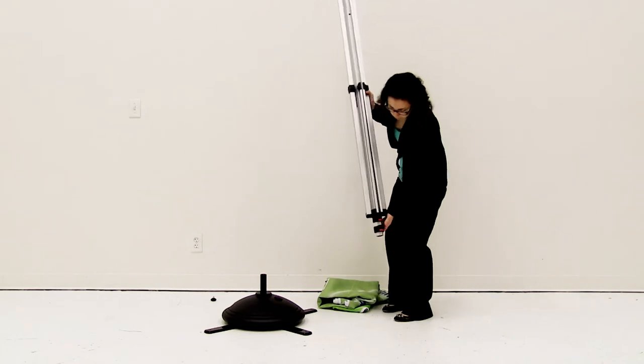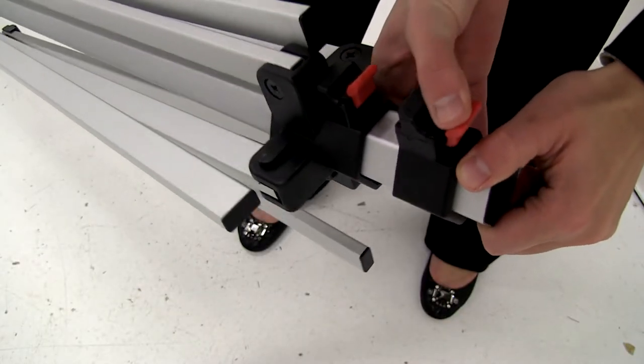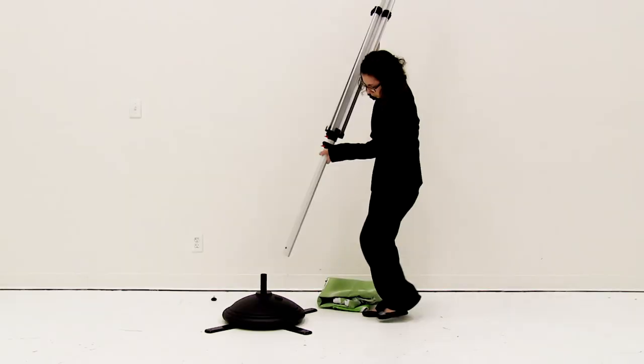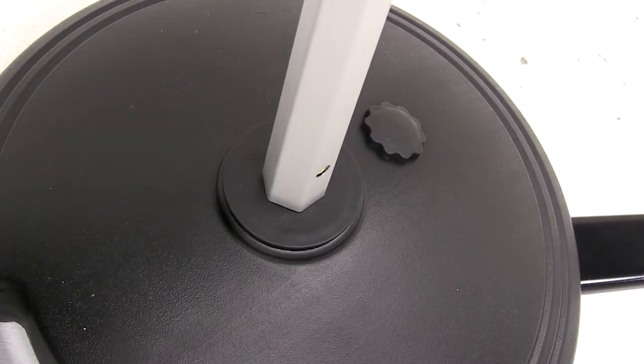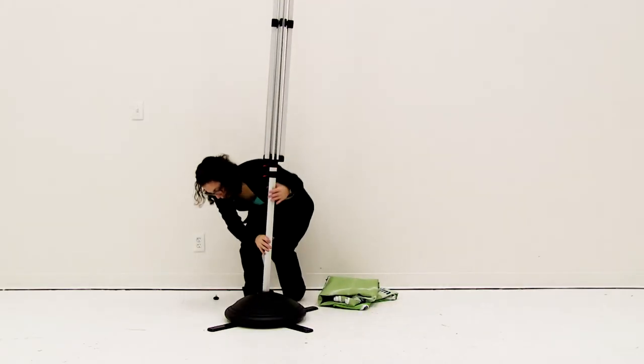On the umbrella, completely extend the bottom pole. Insert the pole onto the base, making sure to align the holes. Screw the black knob screw into the hole.